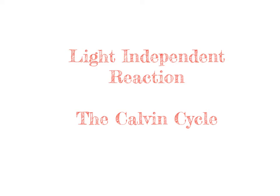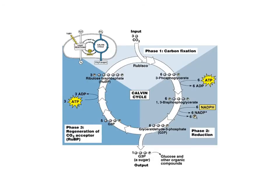The light independent reactions, or the Calvin cycle as it is called, takes place in the stroma of the chloroplast. As its name suggests, it is a cycle with three phases.